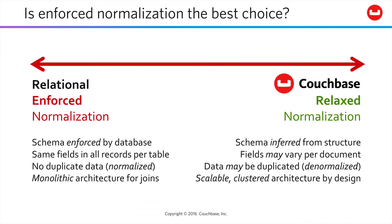Another implication of the relational approach is a monolithic architecture, because if your data is divided up into normalized tables, to get it out in the shape that you actually need, you have to join data in memory, and joins do not work well at all across a cluster. This is why Couchbase has a scalable, clustered architecture by design.